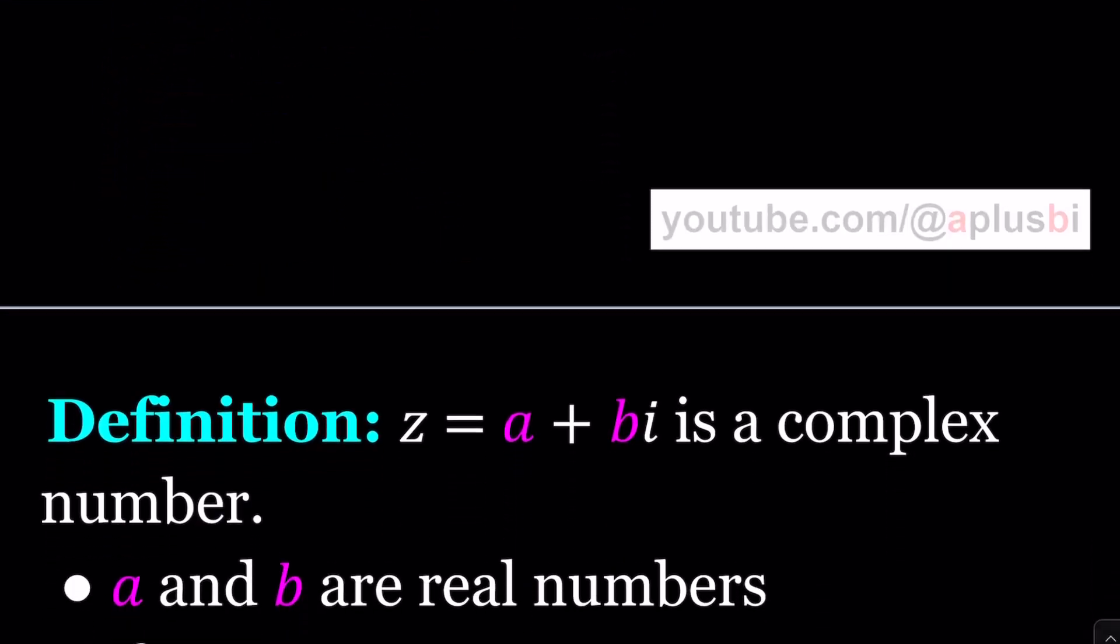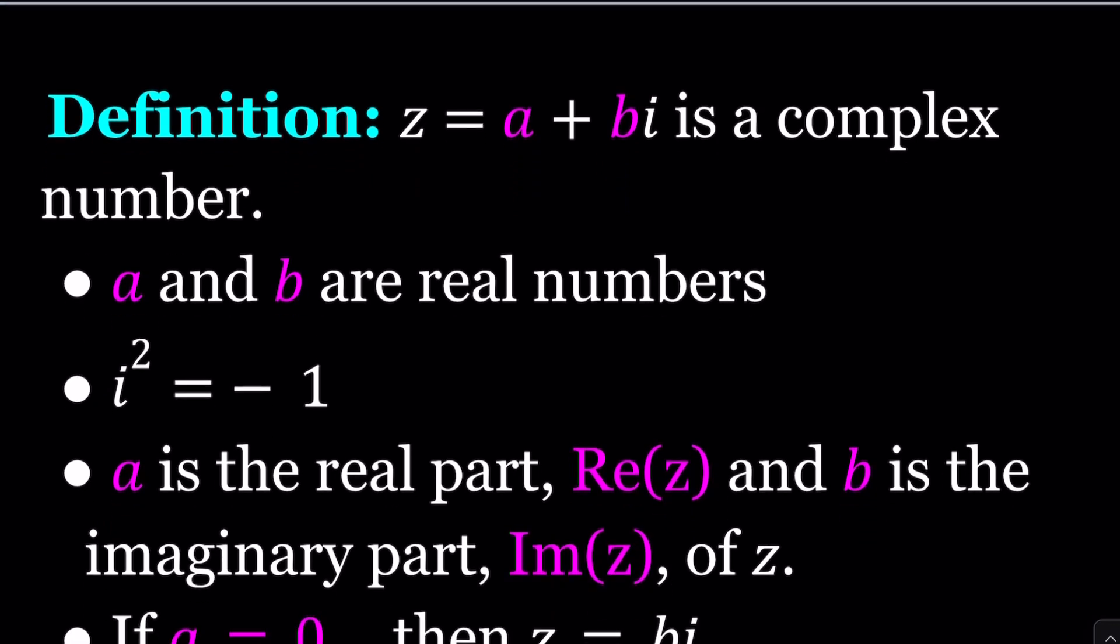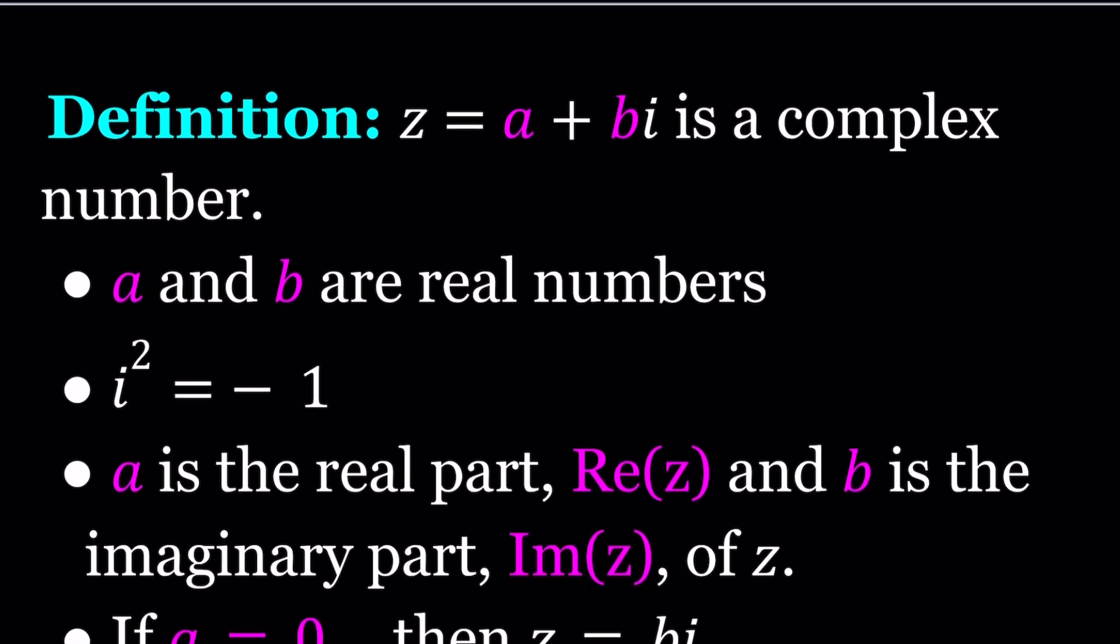Let's go ahead and take a look at some definitions here. Definition: Z equals A plus B i is a complex number where A and B are real numbers. So that's important. We have to make sure that A and B are real numbers. It can be fractions, it can be radicals, it can be pretty much any real number. The most important part is that i squared is equal to negative 1. So we define a special number whose square equals negative 1, and then we just use that to define a complex number, which can be written as A plus B i. And this is pretty much the standard form for a complex number.